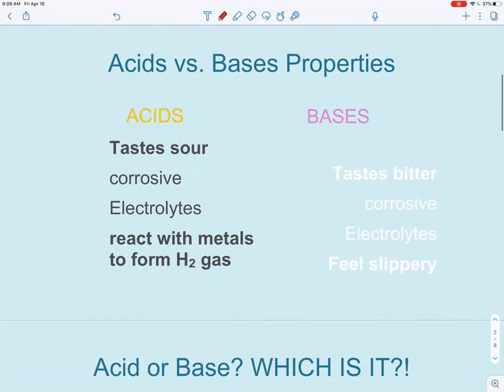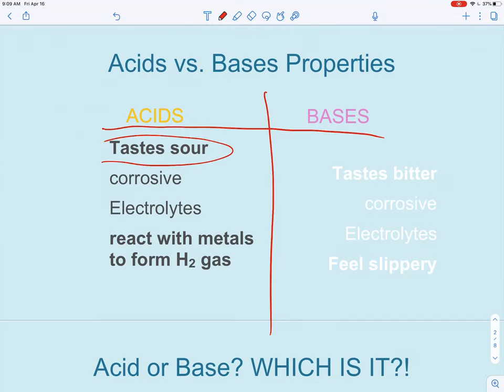So just a review, we learned a little bit about the properties of each of these. Recall that acids taste sour, so think of lemons. Whereas bases taste kind of bitter. Remember soaps are often considered bases, and if you ever had to wash your mouth with soap you would know it tastes kind of bitter.